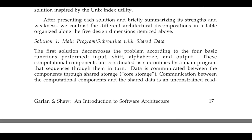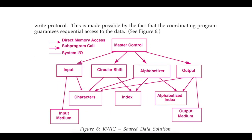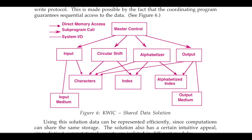The first solution uses the standard main program and subroutines with shared data. The program is divided into input, circular shift, alphabetizer, and output modules, where each module accesses the data — characters — directly. The benefit is a straightforward procedure-based approach. The problem is that if something changes in the data, it affects all programs, and since they are tightly coupled, these components are difficult to reuse.